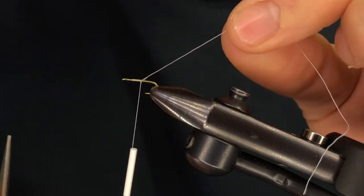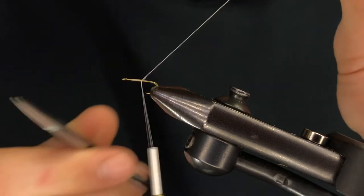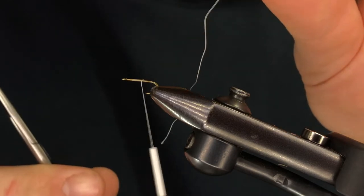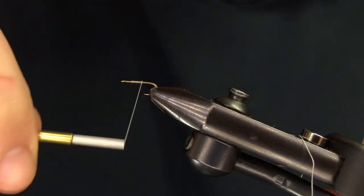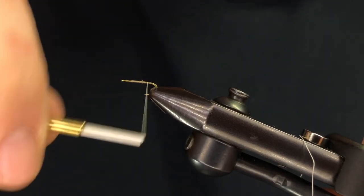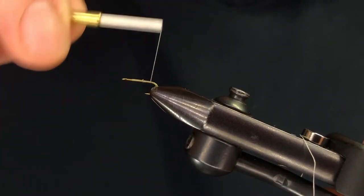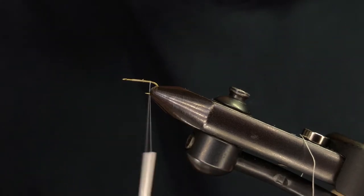Real important when you get started, you're going to have a tag end here with your thread. Save this. You're going to want this for the next step. We're wrapping our thread back, really minimal wraps, back to about the barb. Leave it there.